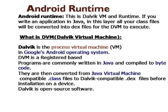Programs are commonly written in Java. As we know, if we want to develop some application in Android, we should know something about Java and compile to bytecode. They are then converted from Java Virtual Machine compatible .class files to Dalvik compatible DEX files — first converted to bytecode .class, then JVM converts that into Dalvik compatible .dex file.